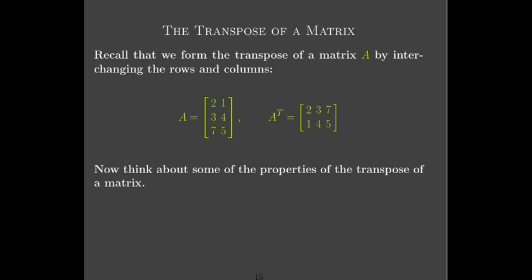Let's look at matrices, and in particular the transpose. Remember that to get the transpose, you swap the rows and columns: your first row becomes the first column of the transpose, and the first column of matrix A becomes the first row of its transpose.